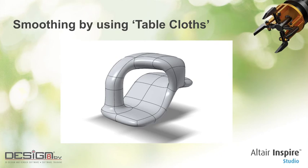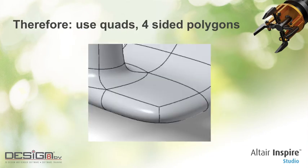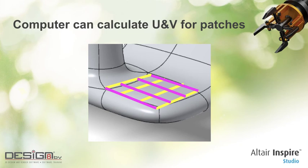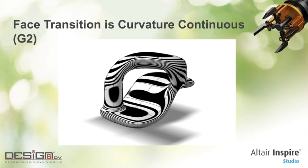If we zoom in a little bit, we see it consists of quads — four-sided polygons. These patches have those U and V directions. The patches are connected in a very, very smooth transition. We call that curvature continuous, or G2, which means that you cannot see a dent in the transition from one patch onto another, thus creating super smooth surfaces suitable for modeling cars, for example.